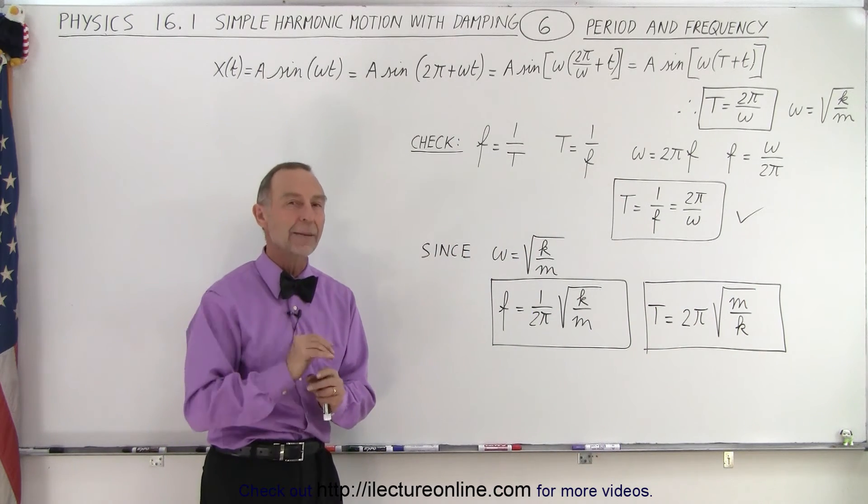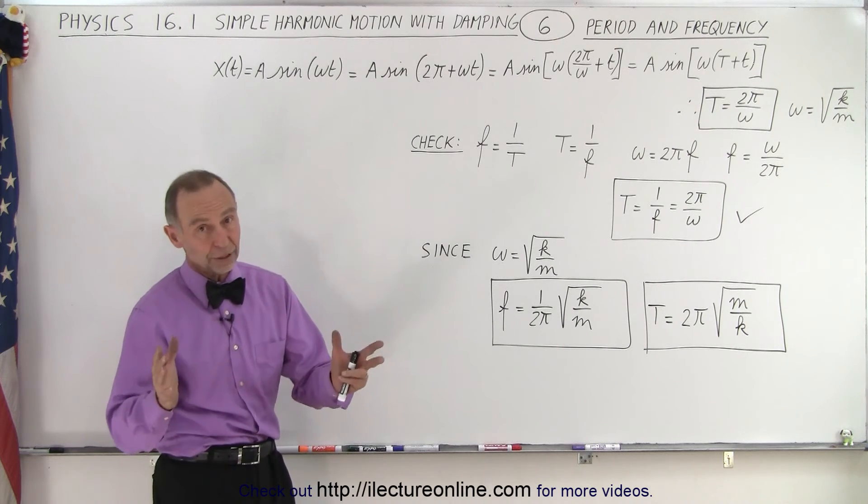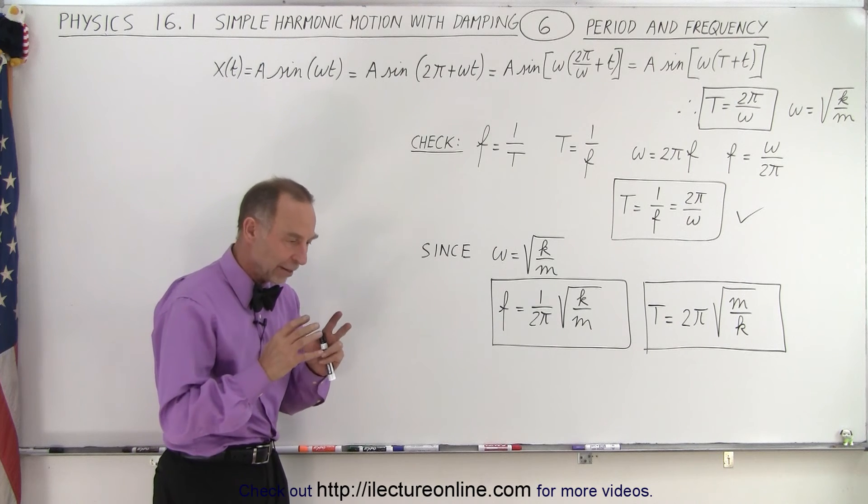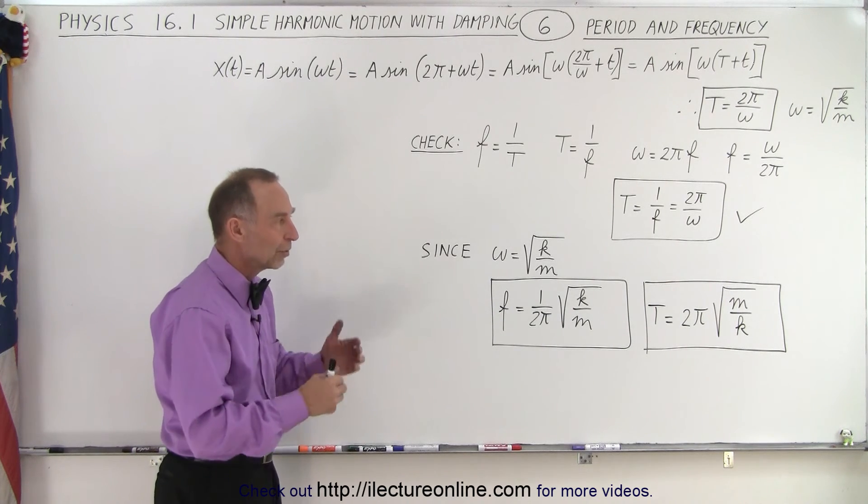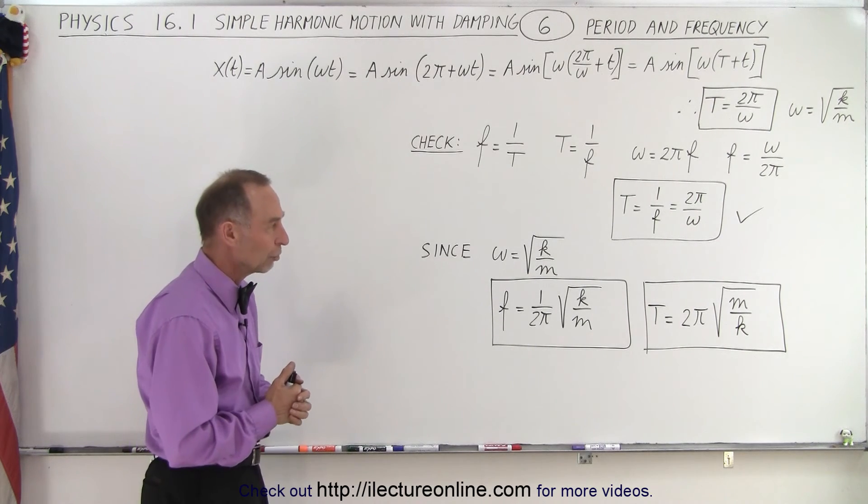Again, this is still the undamped system. But now we have a complete understanding, hopefully, of undamped oscillatory motion. We've looked at the second-order differential equation that is associated with that, and we've seen how different initial conditions will give you the general solution to that equation.